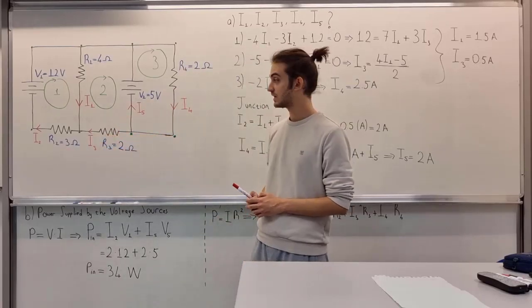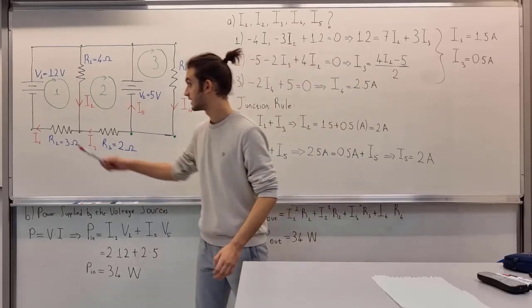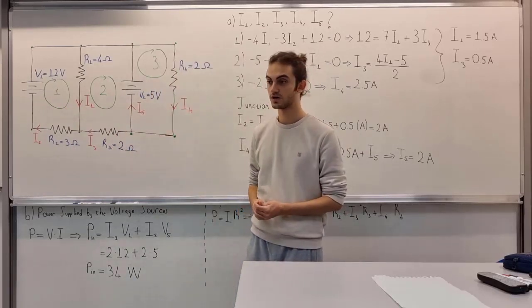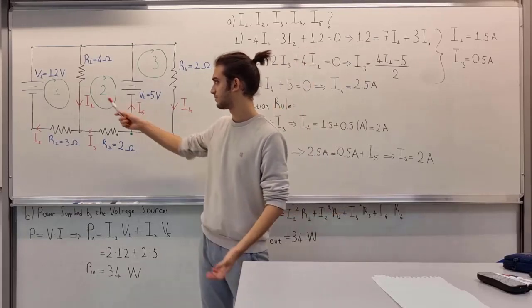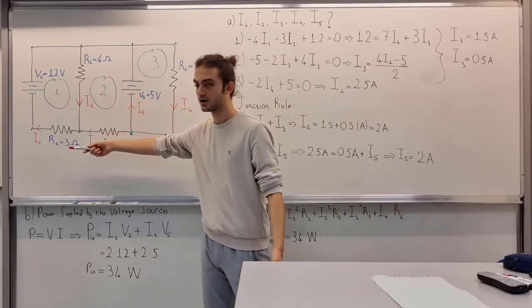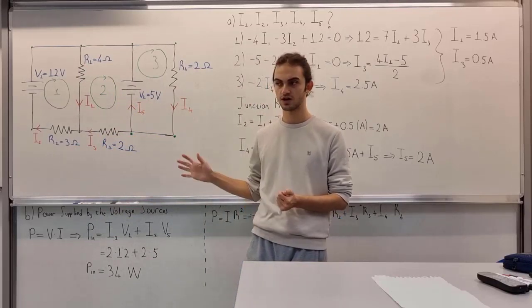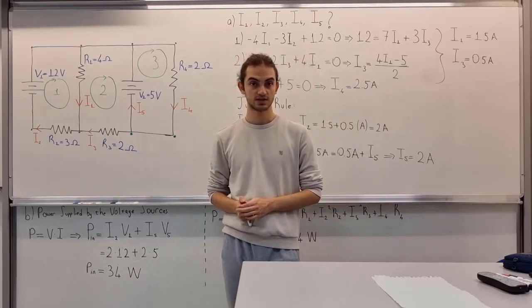In option B, we need to find the power supplied by the voltage sources, V1 and V2. In option C, we need to find the power dissipated by the resistors - R1, R2 and so on. If you want to try this question by yourself, you may pause the video now. And we'll start.